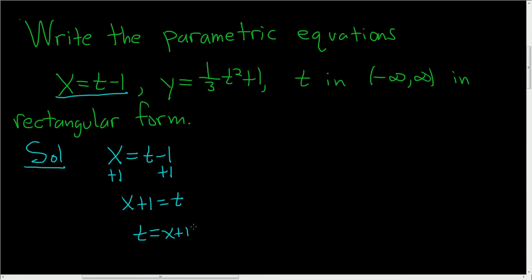So now that we've solved for t, all we have to do is take this value of t and plug it in here. So we end up with y equals 1 third parentheses x plus 1 squared plus 1.